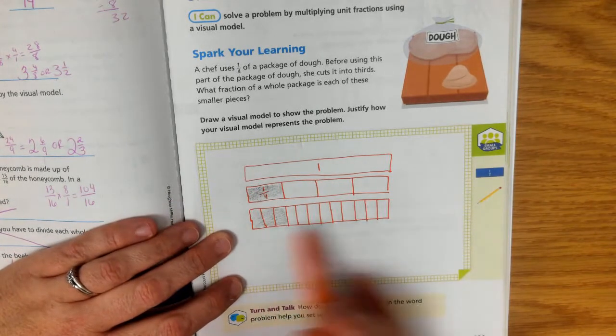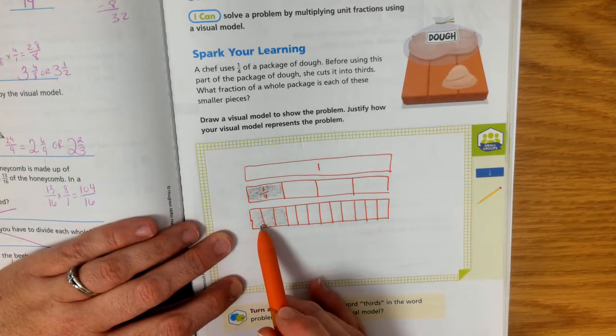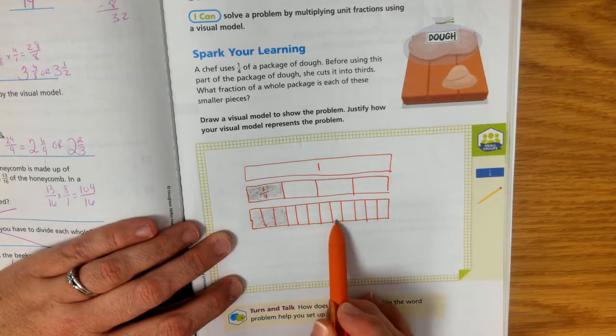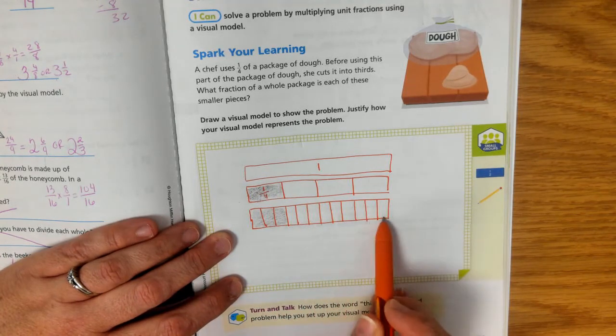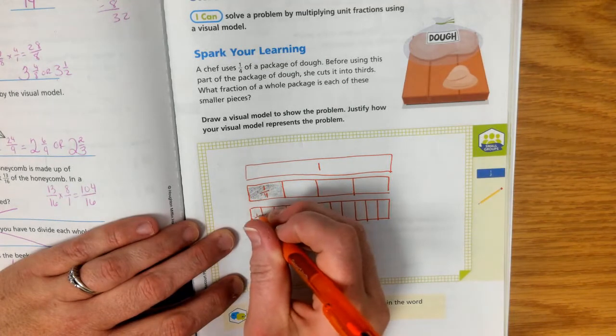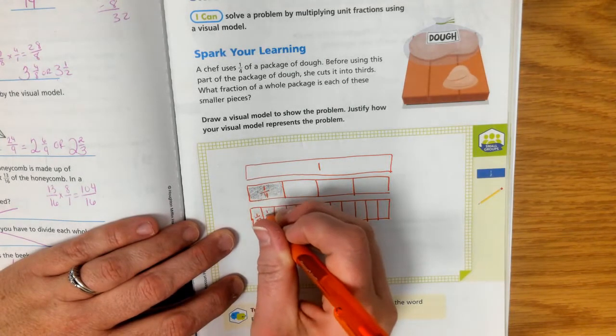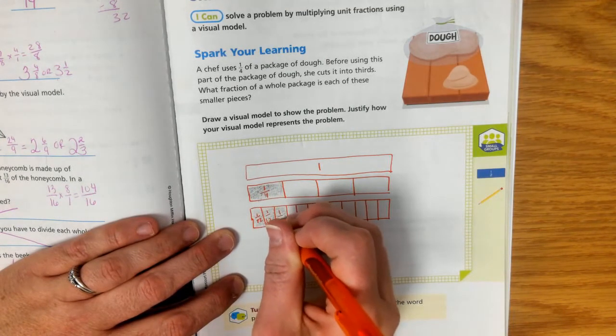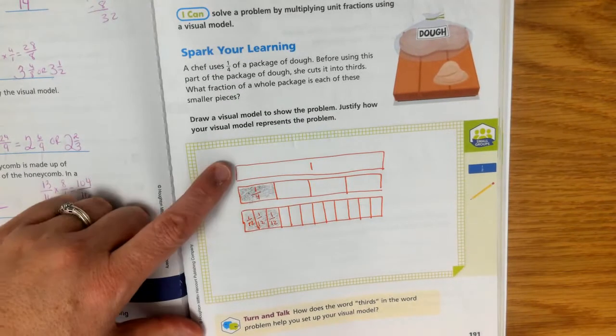So what are each of these pieces? Well, this would be 1, 2, 3, 4, 5, 6, 7, 8, 9, 10, 11, 12. So these are each worth one-twelfth of the whole.